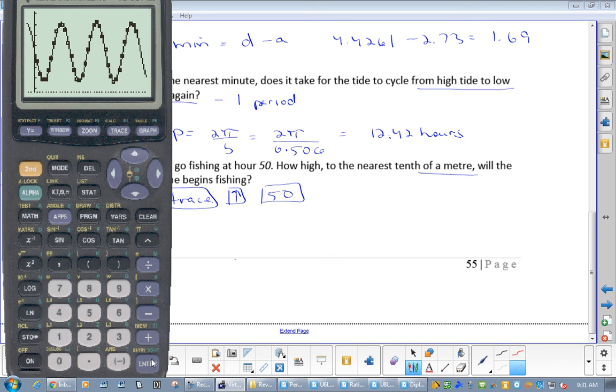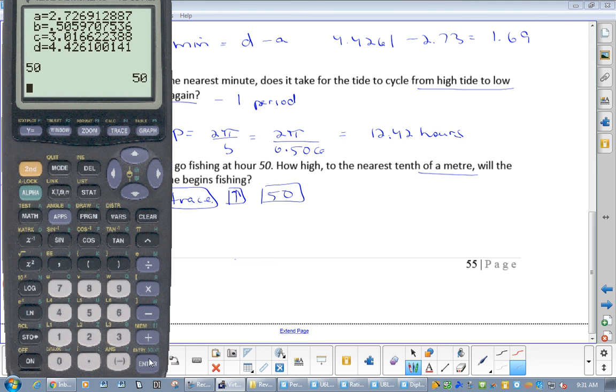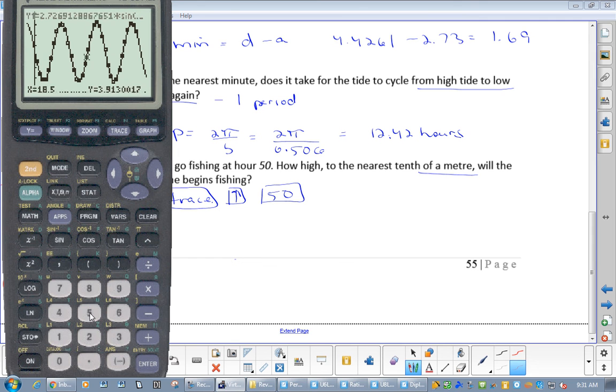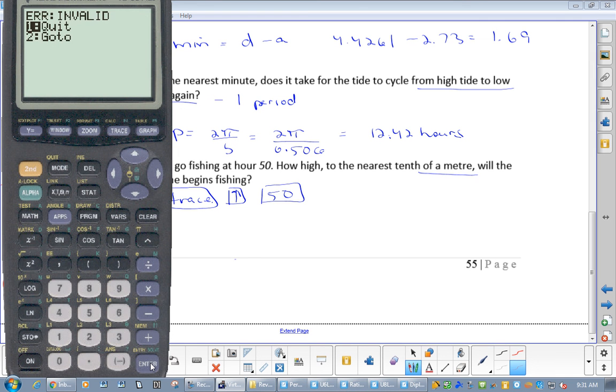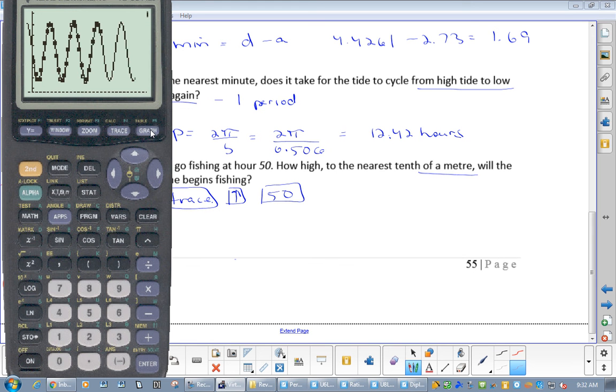Now, since we're looking for an X value at 50, we'd hit trace 50. Trace up 50, enter. And I get an error. Now why do I get an error? Because if you go to your window, so get out of here, go to your window, my X max is only 39.5, so you've got to put it to 60. Hit graph. Okay, so now go trace up, then put in 50, and you get 4.31 meters.